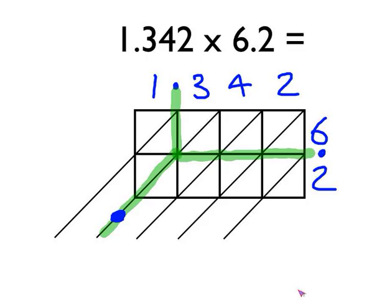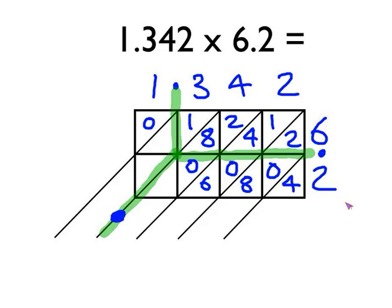OK, then we fill in the boxes as before. 2 times 6 is 12. 2 times 2 is 4. 4 times 6 is 24. 4 times 2 is 8. 3 times 6 is 18. 3 times 2 is 6. 1 times 6 is 6. And 1 times 2 is 2.